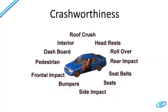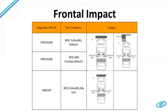In crashworthiness, the crash tests OEMs are interested in include: roof crash — when a car rolls over, the roof impacts the occupant; headrest for whiplash; rollover; rear impact; seat belts; side impact; bumper tests; frontal impacts; pedestrian safety; dashboard for occupant; and interiors for occupants. These are the various aspects any OEM looks into when designing a car for crashworthiness.